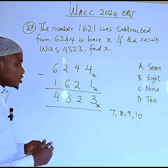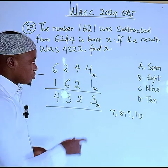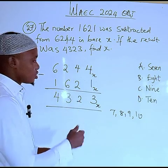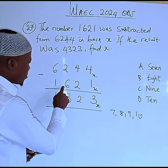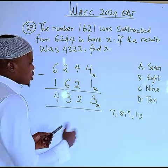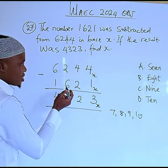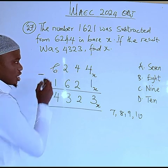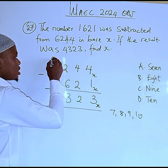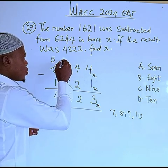Let's work through the subtraction column by column. 4 minus 1 gives 3. 4 minus 2 gives 2. Now look at this column: we have 2 on top and 6 below. We need to borrow one from the next column. If we borrow one, that column becomes 5.